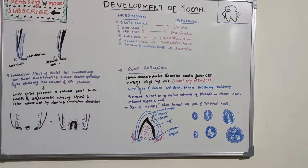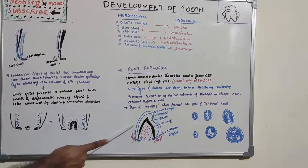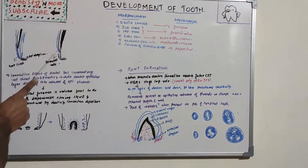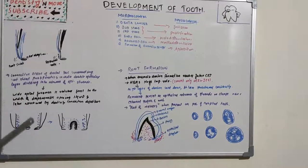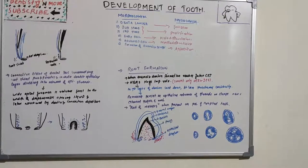The connective tissue of the dental sac surrounding the root sheath proliferates and invades the continuous double epithelial layer, dividing it into a network of epithelial strands. This rapid sequence of proliferation and destruction of HERS explains why it cannot be seen as a continuous layer on the surface of the developing root, remaining instead as strands or clumps, or as cell rests of Malassez in the periodontal ligament.